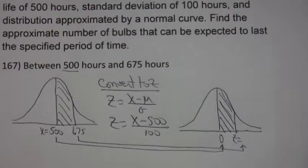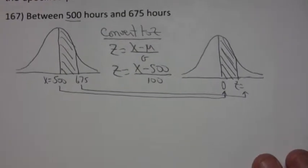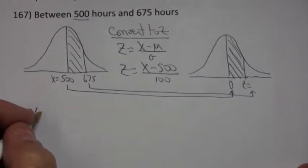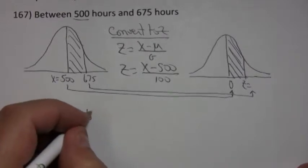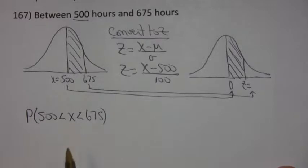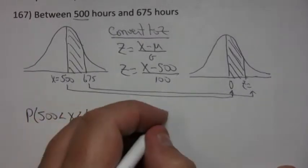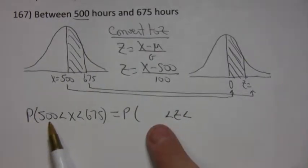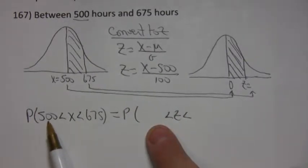So graphically, that's what I'm trying to do. Now let's actually push it through and do the probability calculations. What I really want to know is the probability that x is between 500 and 675. What I've got to do to convert that x to a z value is take each one of these values, subtract the mean, divide by the standard deviation.